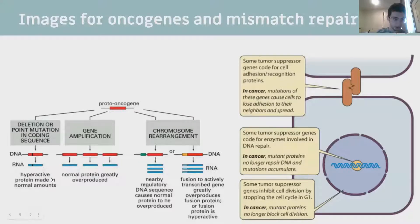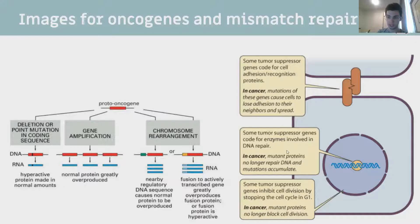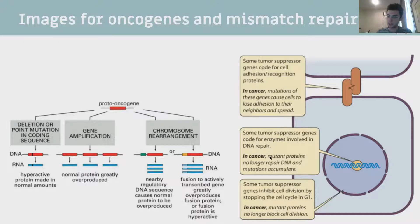On your left you have your oncogene, which can lead to a hyperactive protein - overproduced because of gene amplification, and not repairing as it goes through the cell cycle, leading to rearrangement and overproduction. Tumor suppressor genes can code for adhesion and recognition proteins - in cancer these may be defective, so the cells don't need to be around other cells and can just grow by themselves. They also involve coding for enzymes involved in DNA repair; if mutated, you're more likely to have mutations, which bring on more mutations. Some tumor suppressors inhibit cell division by stopping the cell cycle.